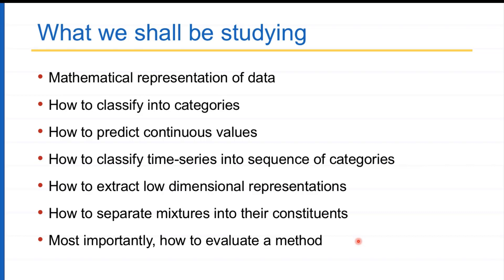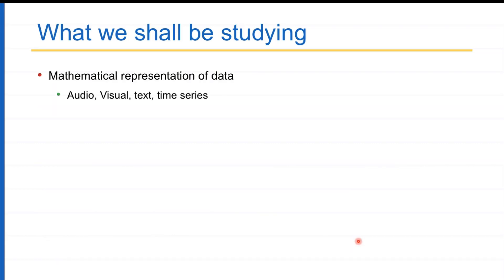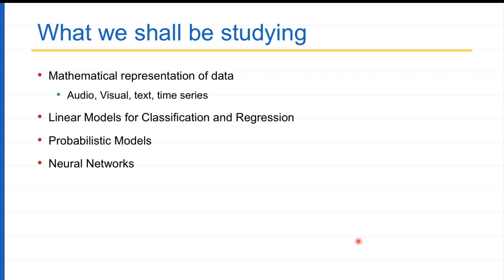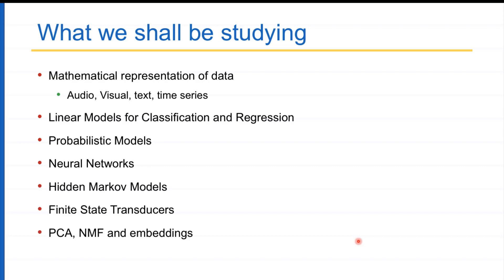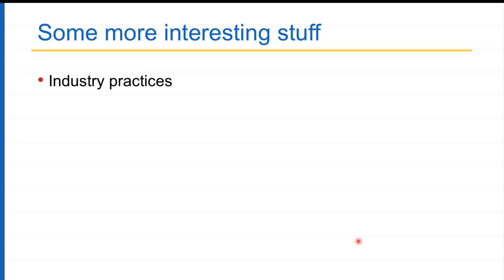Very importantly, how to evaluate a method — you've made an algorithm, how do you assess how good or bad it is and compare it with other methods? This is critical, otherwise you won't know if you can deploy it in a real-life scenario. We'll cover mathematical representation of data, linear models for classification and regression, probabilistic models, neural networks, hidden Markov models, finite state transducers, PCA, NMF, and embeddings — the technical terms for everything discussed — plus industry practices.